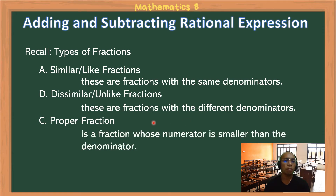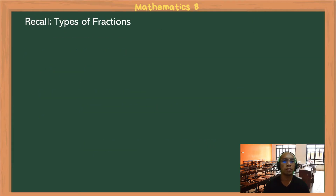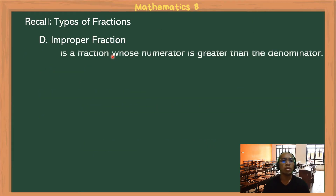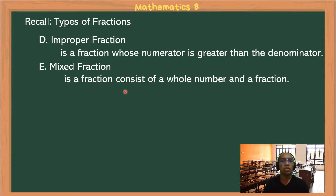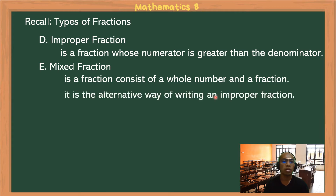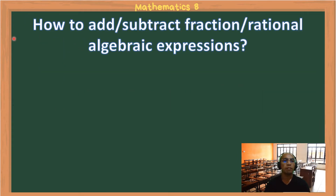We also have proper fractions, where the numerator is smaller than the denominator. We have improper fractions, where the numerator is greater than the denominator. And we have mixed fractions, which consist of a whole number and a fraction — this is an alternative way of writing an improper fraction.